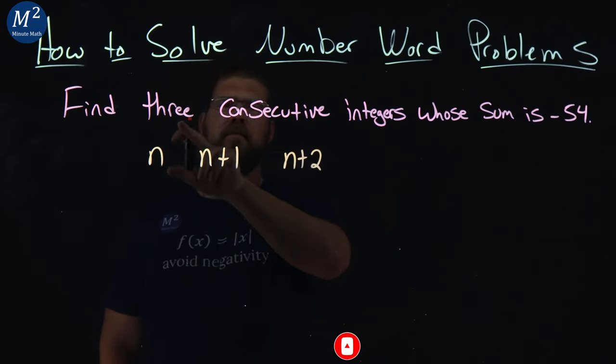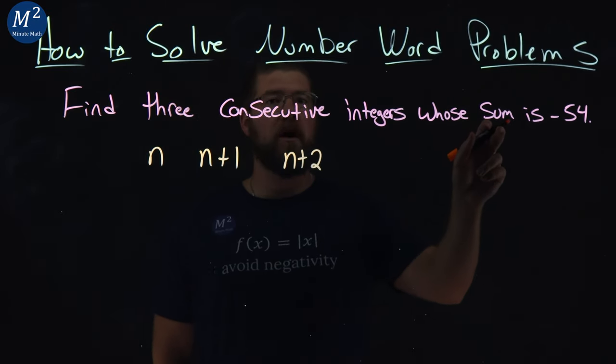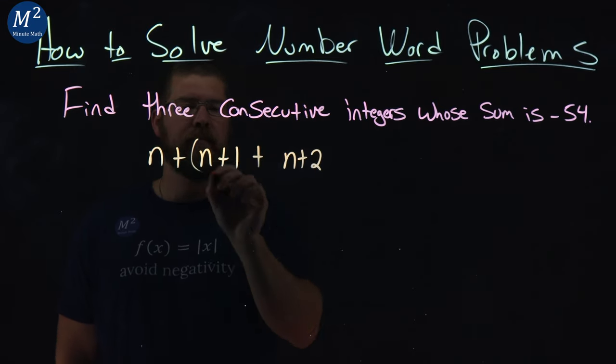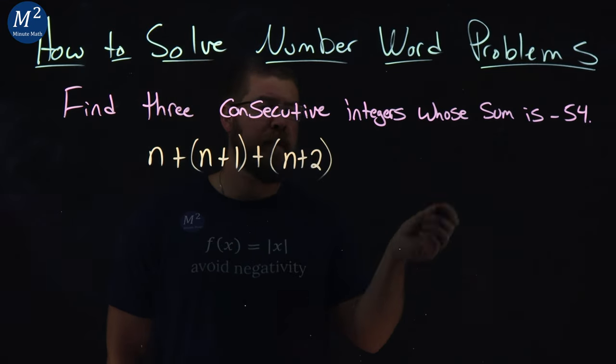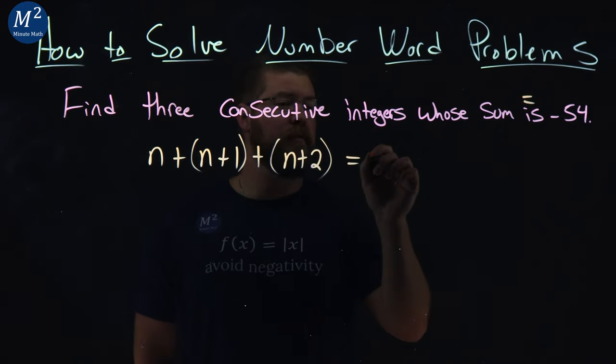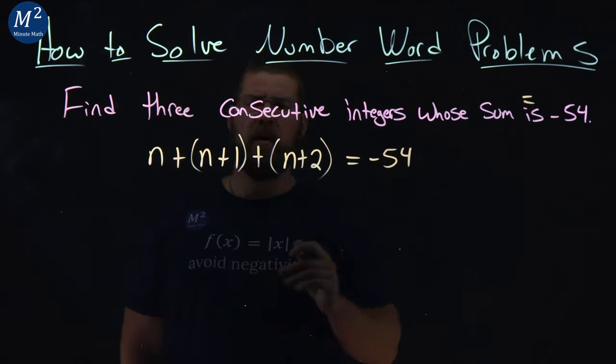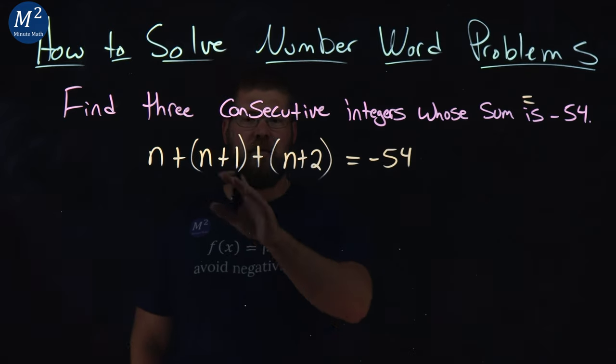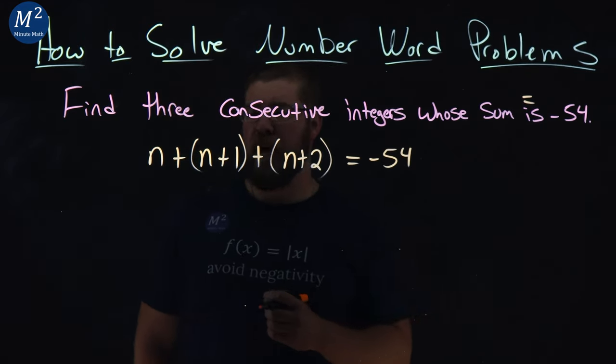Now it tells us we have three consecutive integers whose sum - we've got to add them all together - is equal to negative 54. You can put parentheses around this if you want. Now we set up an equation with just one variable, and we can solve for that.